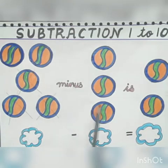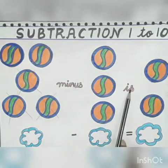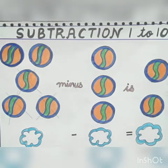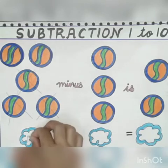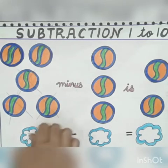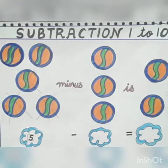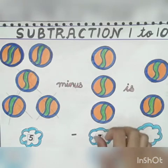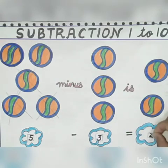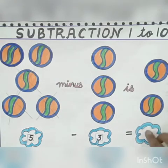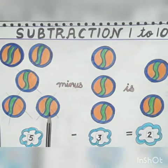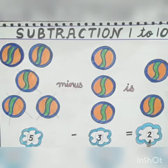So 5 minus 3 is 2. We can also write it like this: 5 minus 3 is equal to 2. If we subtract 3 from 5, we get the answer 2. I hope children you have understood this.